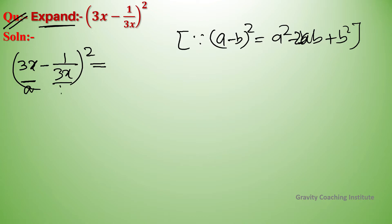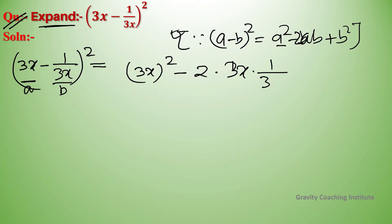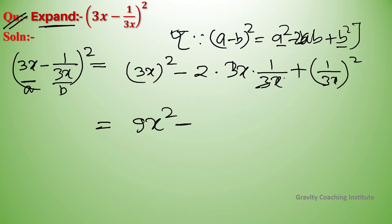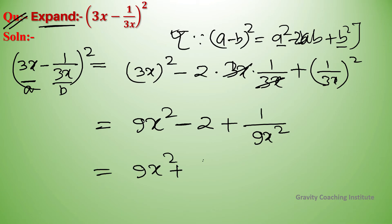According to this identity, a is 3x and b is 1 upon 3x. So we have (3x) whole square minus 2 into 3x into 1 upon 3x plus (1 upon 3x) whole square. This gives 9x squared minus 2, since 3x and 3x cancel, plus 1 upon 9x squared. Arranging terms: 9x squared plus 1 upon 9x squared minus 2.